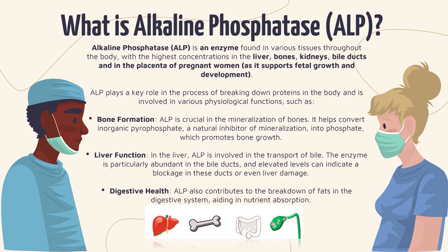In bone formation, ALP is crucial in the mineralisation of bones. It helps convert inorganic pyrophosphate, a natural inhibitor of mineralisation, into phosphate which promotes bone growth. In the liver, ALP is involved in the transport of bile, and the enzyme is particularly abundant in the bile ducts — elevated levels can indicate a blockage in these ducts or even liver damage. ALP also contributes to the breakdown of fats in the digestive system, aiding in nutrient absorption.